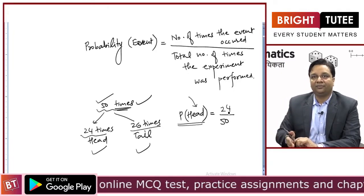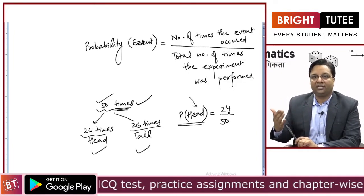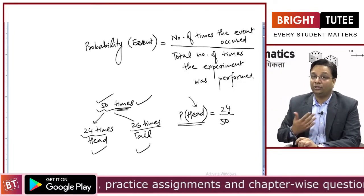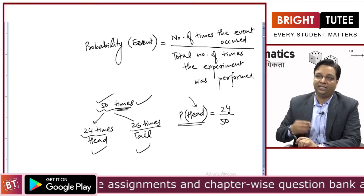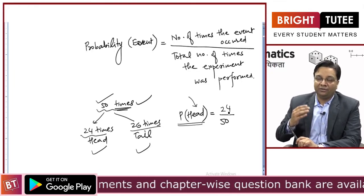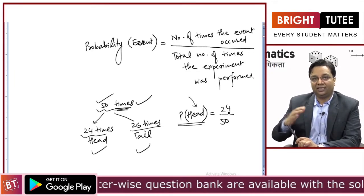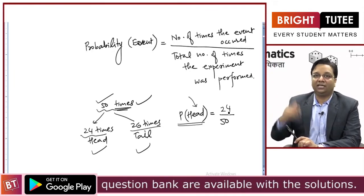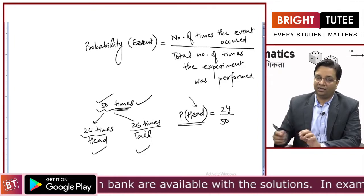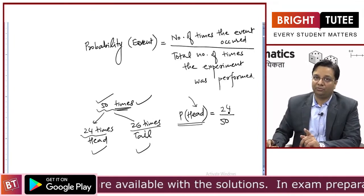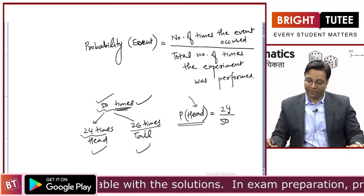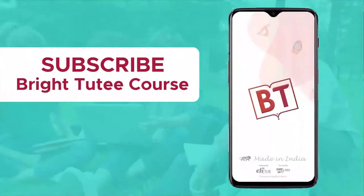In class 9th we will talk about experimental probability only. Then in class 10th and higher classes, we will talk about theoretical probability and be really precise about the calculation of probability.